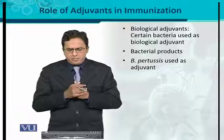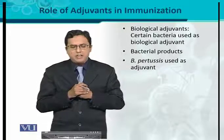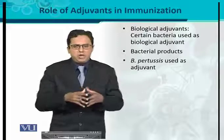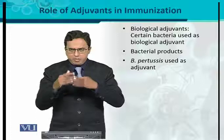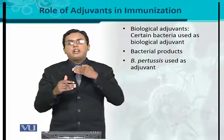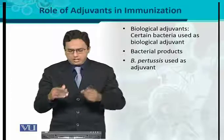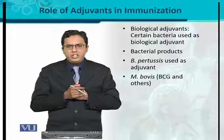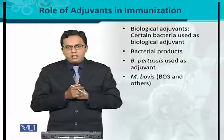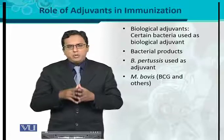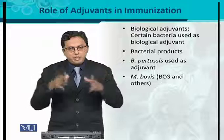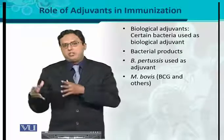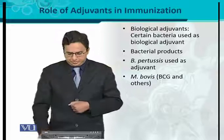A best example is Bordetella pertussis, which is a bacterium used as an adjuvant with different vaccines. When used with vaccines, it properly activates the immune system and increases the antigenicity of the antigen with which it is introduced. Another example is Mycobacterium bovis, which is used with the BCG (Bacillus Calmette-Guérin) vaccine for tuberculosis. Mycobacterium bovis acts as a biological adjuvant, activating BCG and increasing its antigenicity.